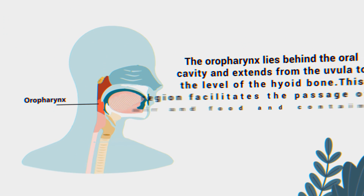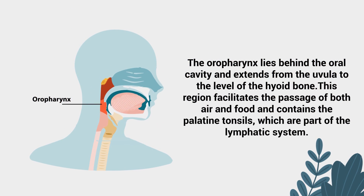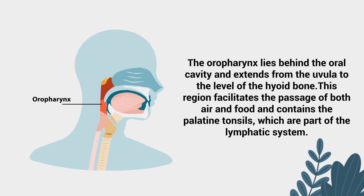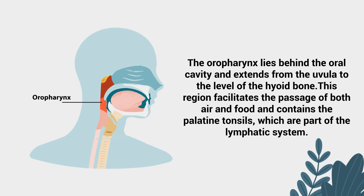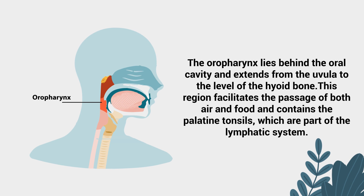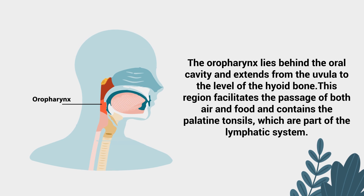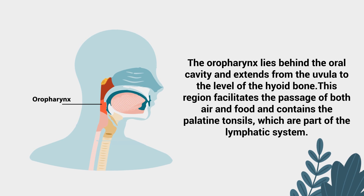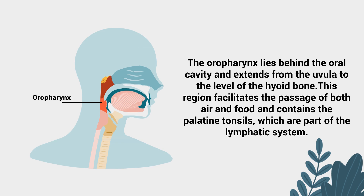The oropharynx lies behind the oral cavity and extends from the uvula to the level of the hyoid bone. This region facilitates the passage of both air and food and contains the palatine tonsils, which are part of the lymphatic system.